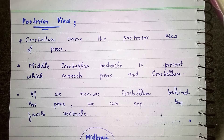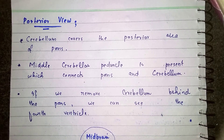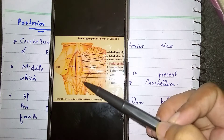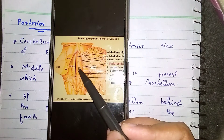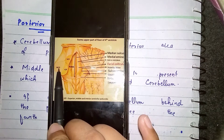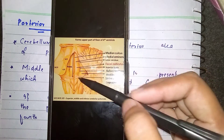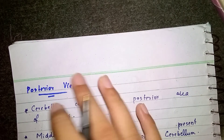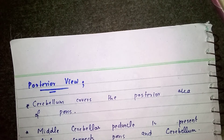If we remove the cerebellum, we see the floor of the fourth ventricle. Looking at the posterior view in the diagram, we can see the Median Sulcus and the Medial Eminence on the posterior surface of PONS. One important point is that PONS contains the pneumotaxic center, which works in close association with the respiratory center. The respiratory center itself is present in the medulla. That was all about the PONS.